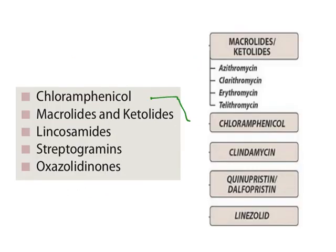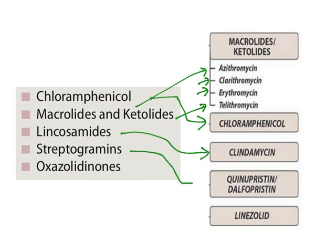Chloramphenicol is a single class of drugs — you have only one drug. Macrolides include azithromycin, clarithromycin, and erythromycin. For ketolides, you have only one drug: telithromycin. Lincosamide example is clindamycin. Streptogramins is a combination of quinupristin and dalfopristin. Oxazolidinones include linezolid and tedizolid. In this video, we will see the mechanism of action and pharmacological aspects of all these agents.